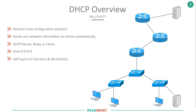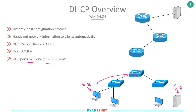DHCP uses UDP port 67 and 68. Port 67 is what the server listens on, and port 68 is where the client listens. Any traffic going to the server will have a destination port of 67 and source port of 68, and traffic going from the server back to the client will have that reversed.